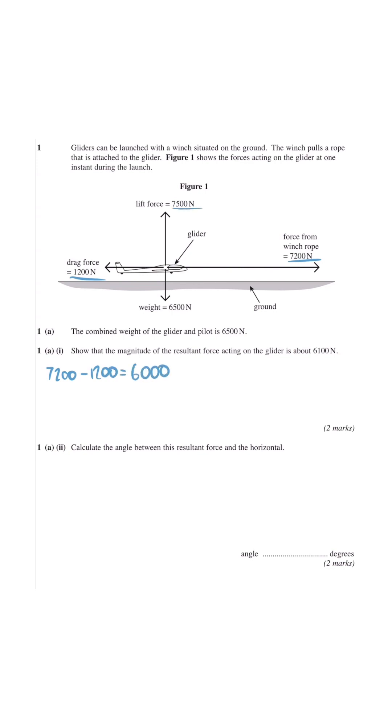For the vertical resultant force you need to minus the 7500 by 6500 which gives 1000 newtons.